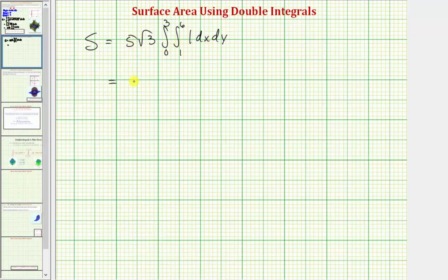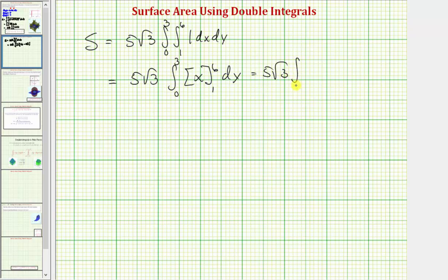We first integrate with respect to x. So we have five square root of three times the integral from zero to three of — the antiderivative of one with respect to x is just x, evaluated from one to six. When x is six we have six, when x is one we have one, so this simplifies to five. Five times five square root of three gives us 25 square root of three.